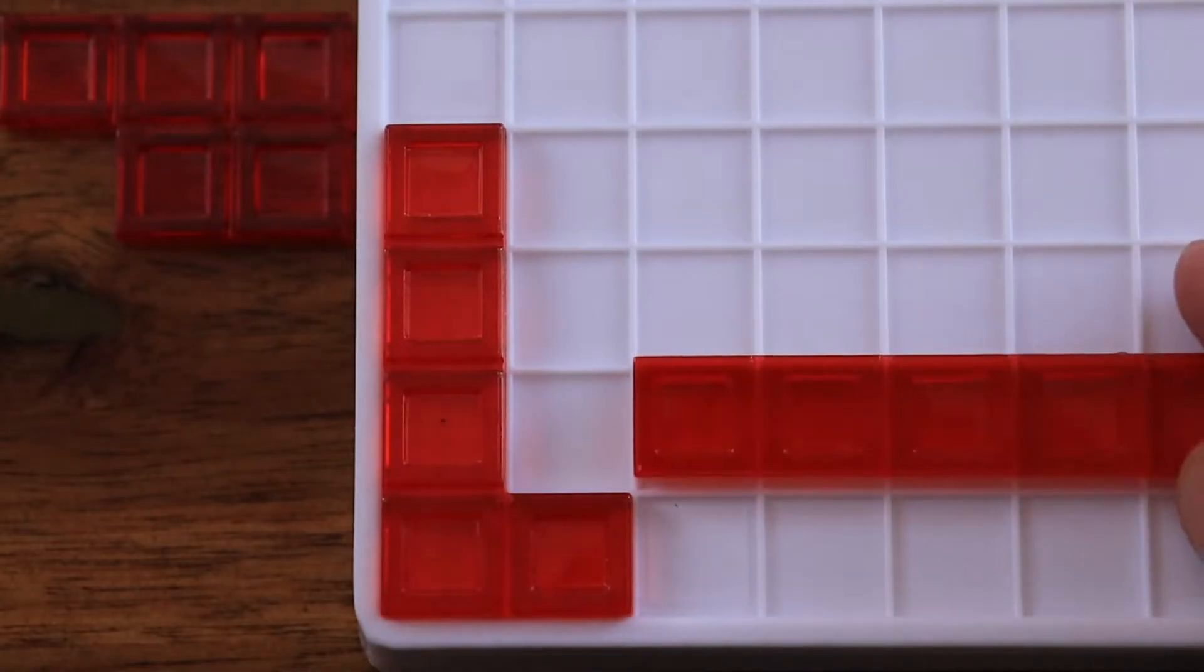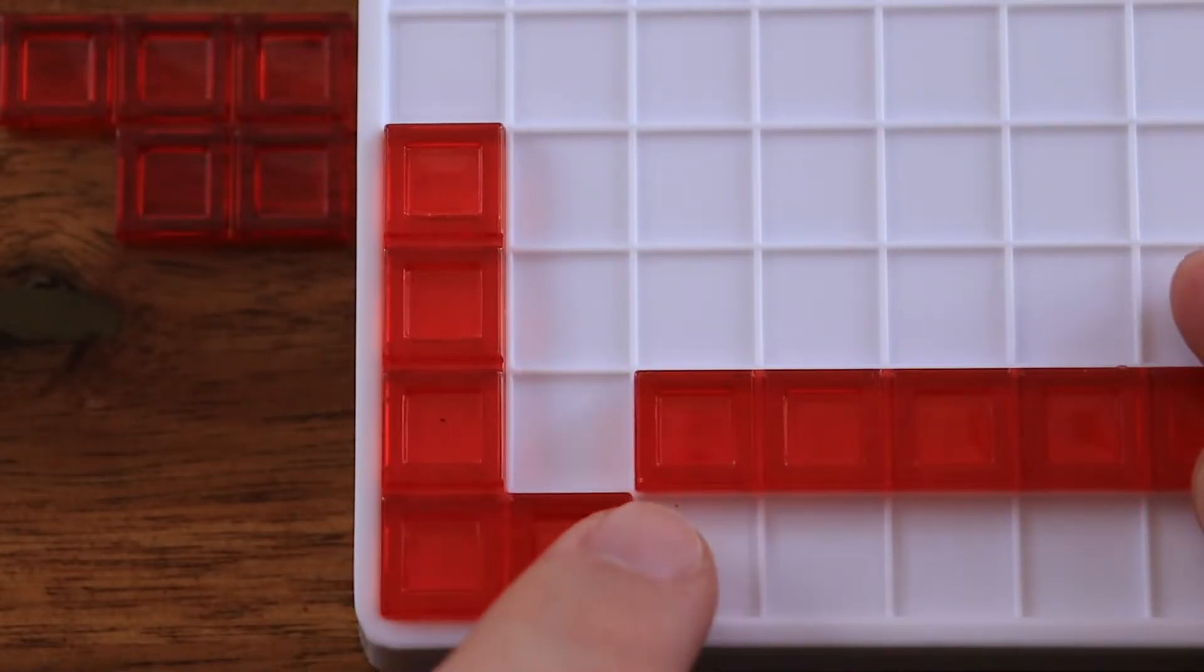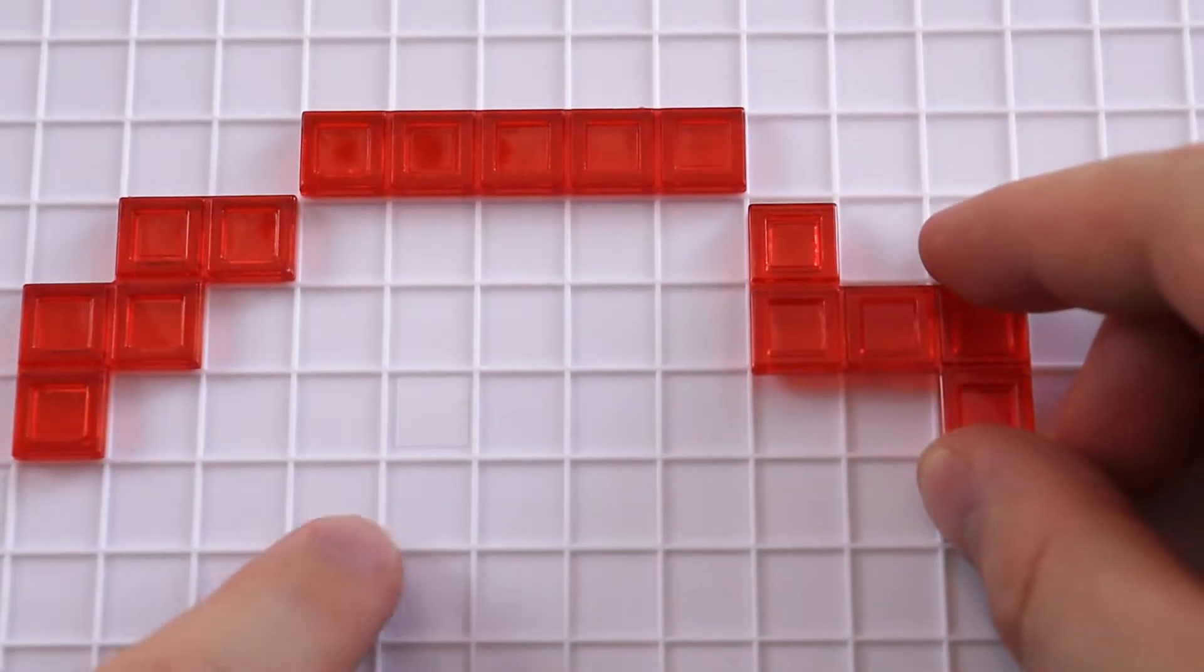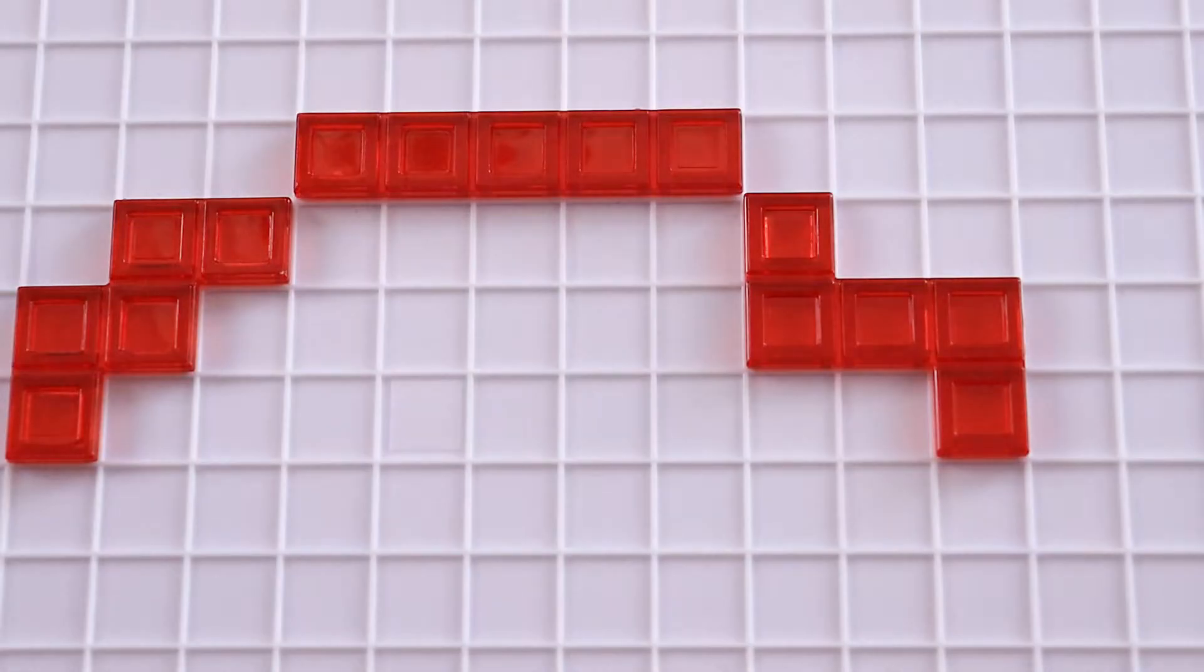Each new piece you play must touch at least one other piece of the same color, but only at the corners. For example, the red player places this piece touching the corner of another piece they previously played.